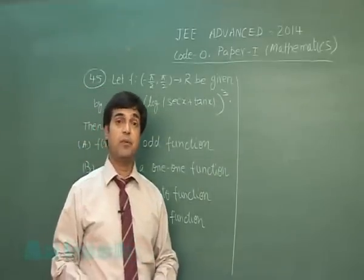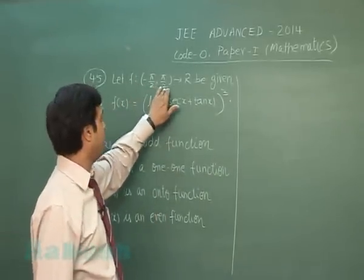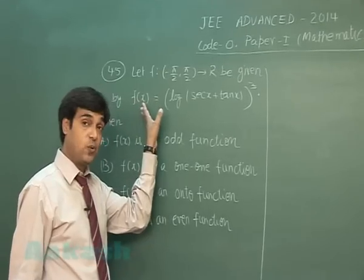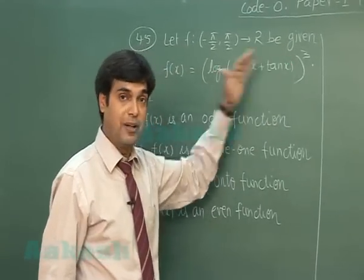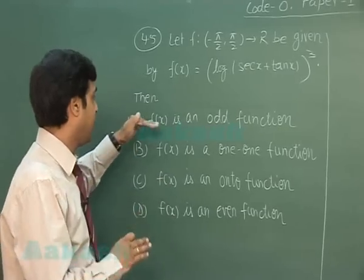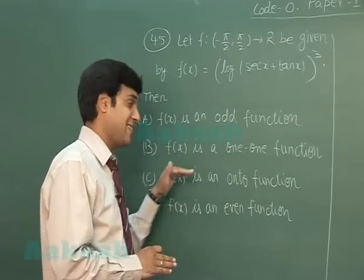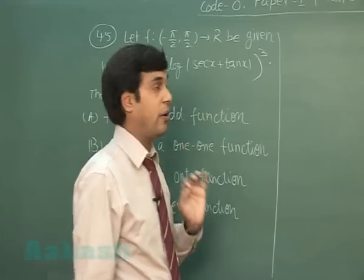Okay, question number 45. Let f from -π/2 to π/2 to the set of real numbers be given by f(x) = log(sec x + tan x)³. Then we have to check whether f(x) is odd or even, f(x) is one-one or not, f(x) is onto or not. So let's start by checking odd or even.